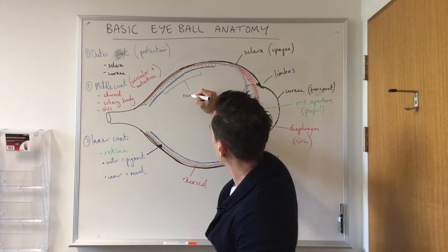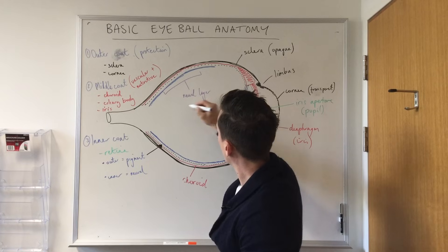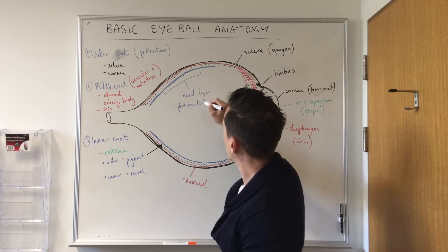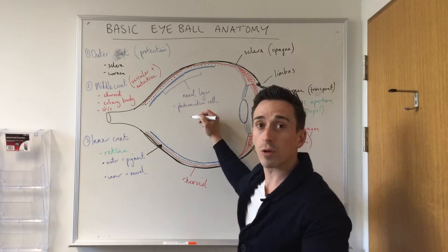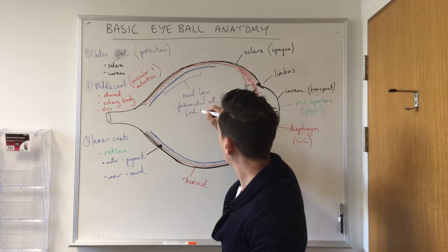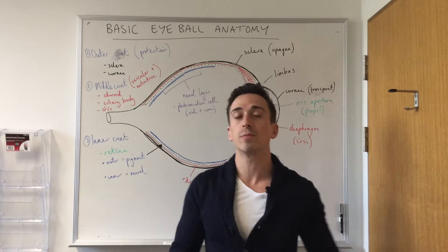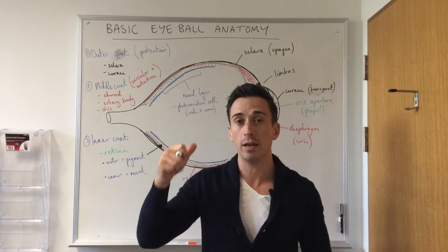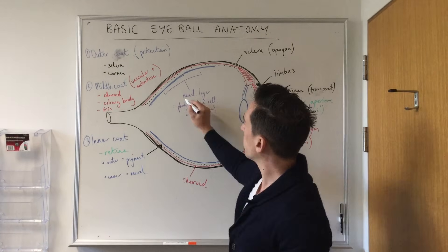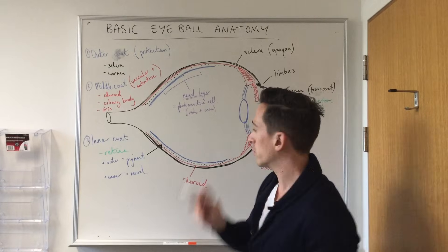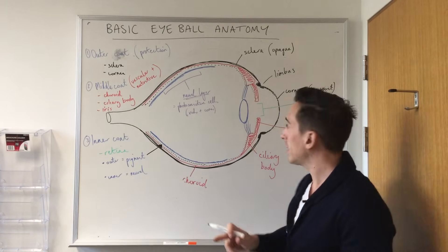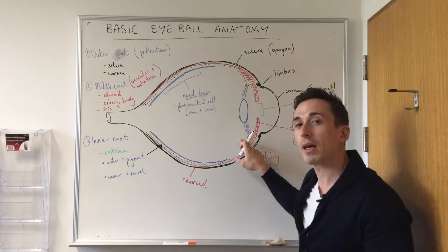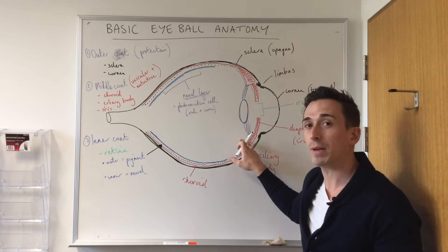The neural layer contains the photosensitive cells — these are the cells that have rods and cones. Rods and cones transduce light into electrical energy that is sent to the brain so we can make sense of what we see. This means there is an anterior area of the eye covered only by the pigment layer that cannot pick up light, and therefore cannot pick up an image to send to the brain.